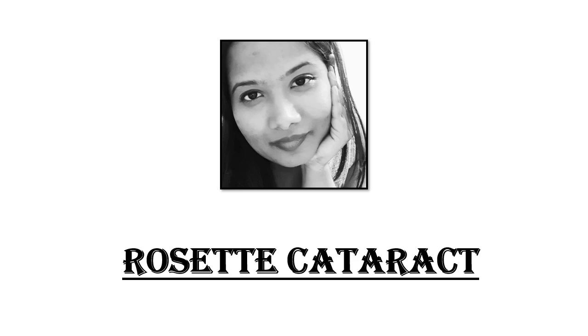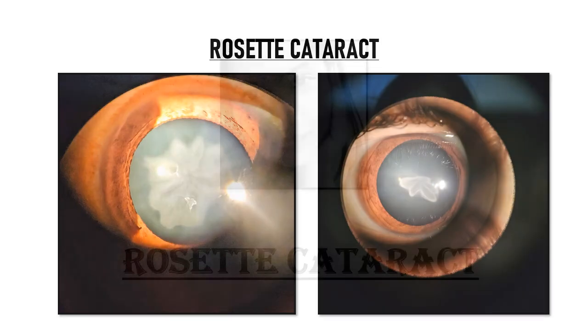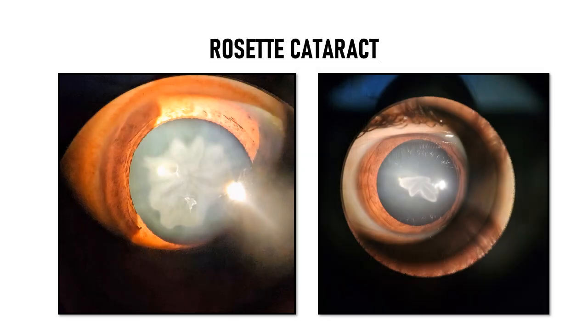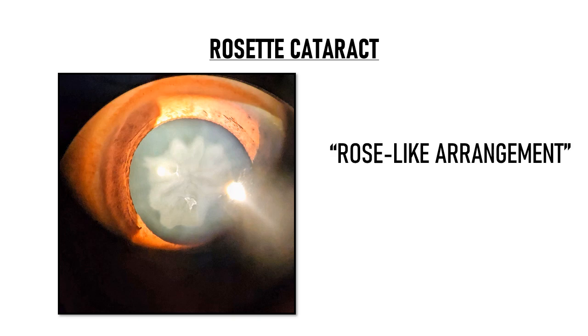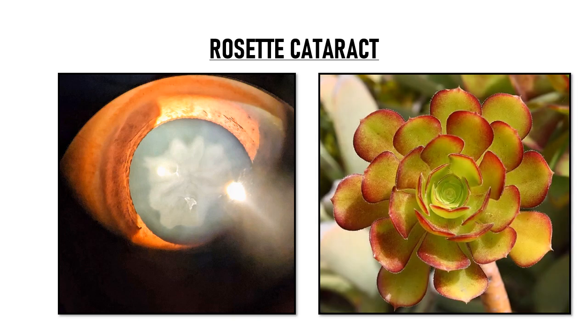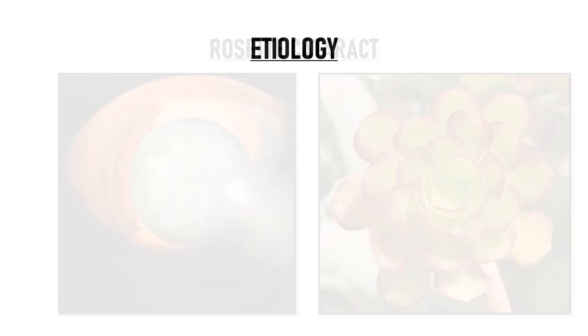Hi everyone, I'm Dr. Bapita and in this video we will learn about rosette cataract. You can see rosette cataract in these two pictures. Rosette means rose-like arrangement, and if you notice carefully, the morphology of this cataract resembles the shape of a flower — that is why it is named as rosette cataract.